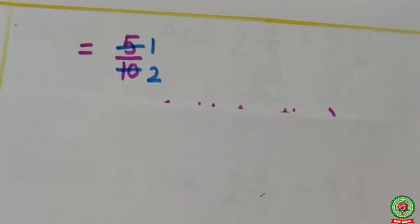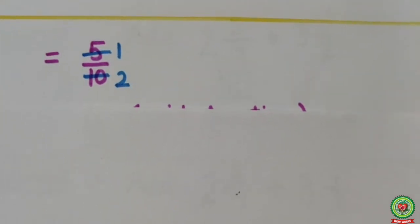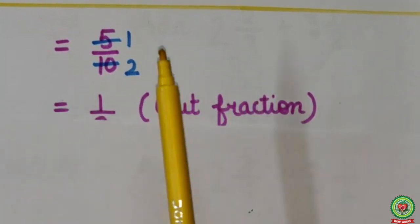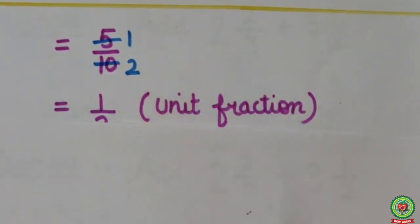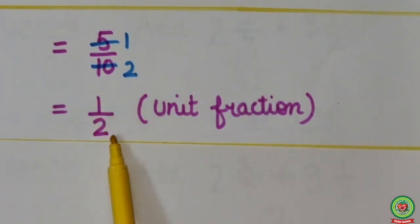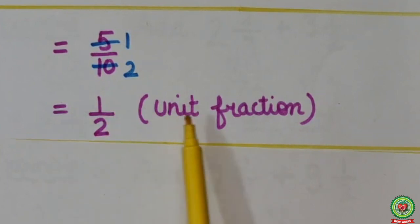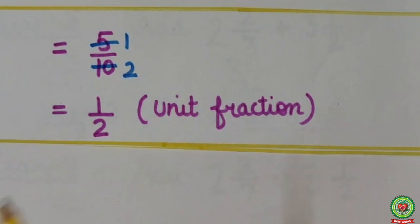As I have told you, fractions should be in lowest term. So here cutting is possible. We will cut the numerator and denominator. To reduce it into lowest term, we have to see the common table. Now 5 and 10 — both are coming on table of 5. So after cutting, 5 ones are 5 and 5 twos are 10. Here the answer is coming 1 upon 2. If the numerator equals 1, then the fraction is known as a unit fraction. So our answer is 1 upon 2, which is a unit fraction.